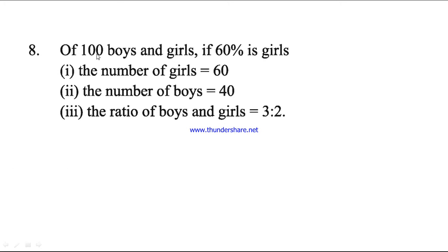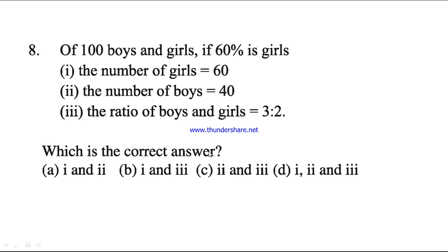Question number 8. Of 100 boys and girls, if 60% is girls, the number of girls is 60, which is correct. Number 2, the number of boys is 40, also correct. And the ratio of boys and girls, 3 is to 2, is incorrect because the ratio of boys and girls will be 2 is to 3, because girls are 60 and boys are 40. So which is the correct answer? The correct answer is 1 and 2.